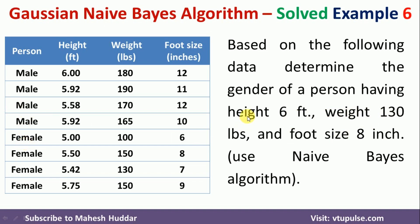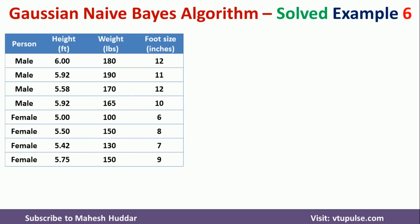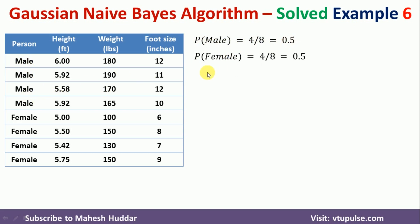In this case, we are going to use the Gaussian Naive Bayes classifier to classify this new example. First, we need to calculate the probability of male and the probability of female. The probability of male is 4 divided by 8, which is equivalent to 0.5. The probability of female is also 4 divided by 8, equivalent to 0.5.